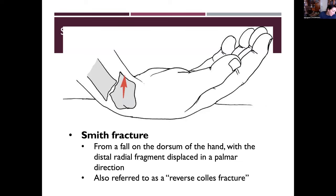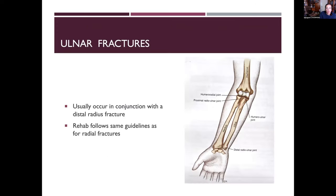A Smith fracture is the exact opposite of a Colles fracture — it occurs when you land on a flexed wrist or receive a direct blow to the back of the forearm. The radius fractures and gets pushed palmarly. Surgery with open reduction internal fixation may be needed if the bones cannot approximate.